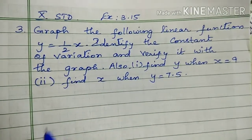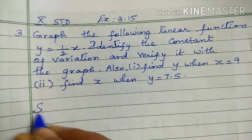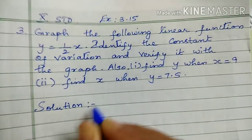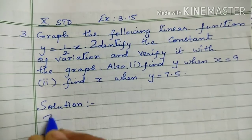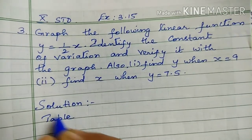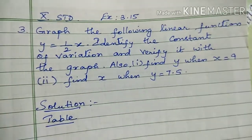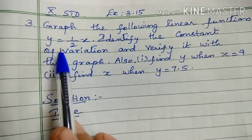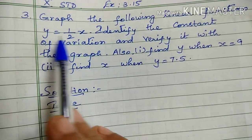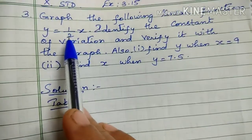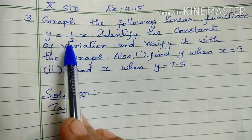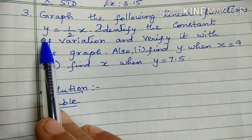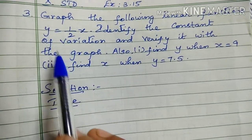First, we need a tabular column. How do we do it? y equal to 1 by 2 x, and y equals kx. Then k is here. The x is on the left side, so k is equal to y by x.